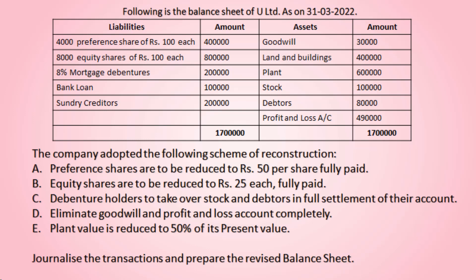Preference shares are to be reduced to rupees 50 per share fully paid. So in the balance sheet the preference share value is rupees 100, which has to be reduced to rupees 50. Then equity shares are to be reduced to rupees 25 each fully paid — so equity share value of rupees 100 has to be reduced to rupees 25.